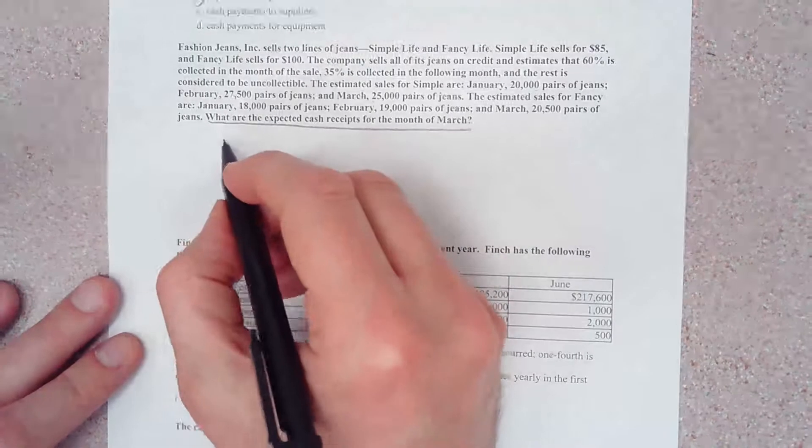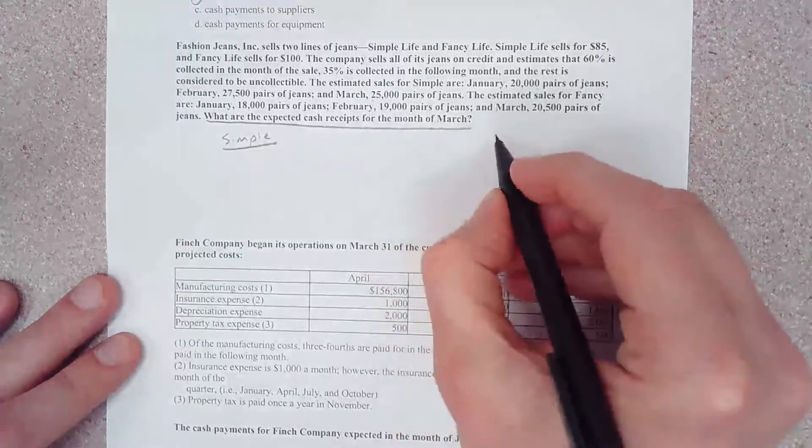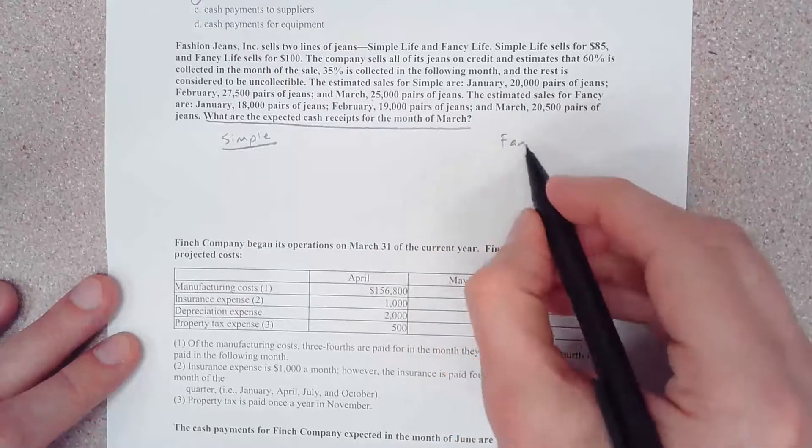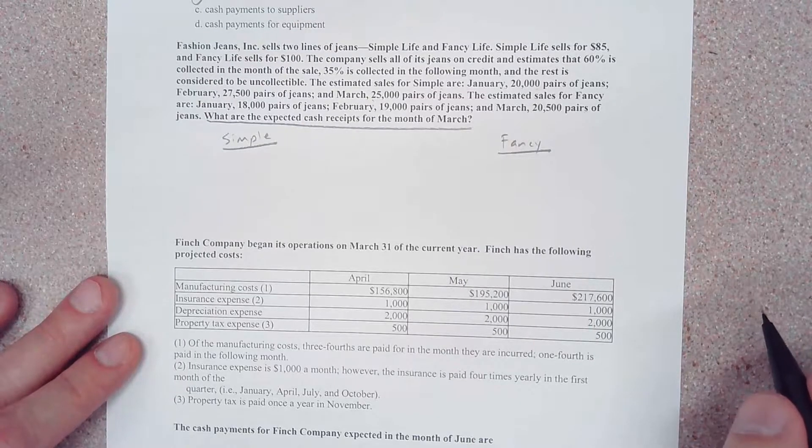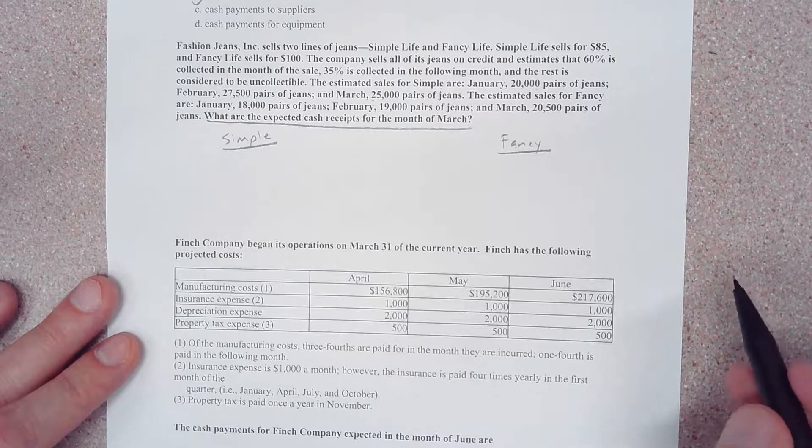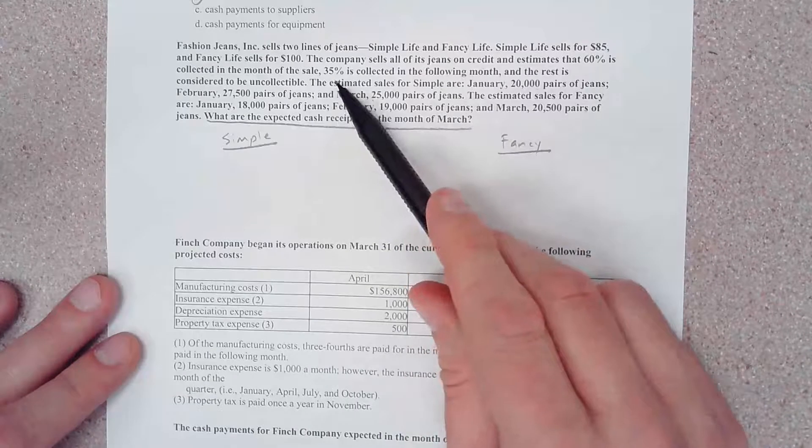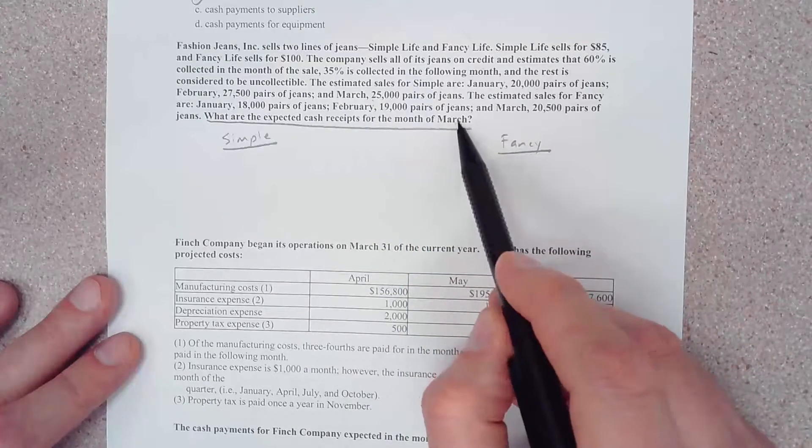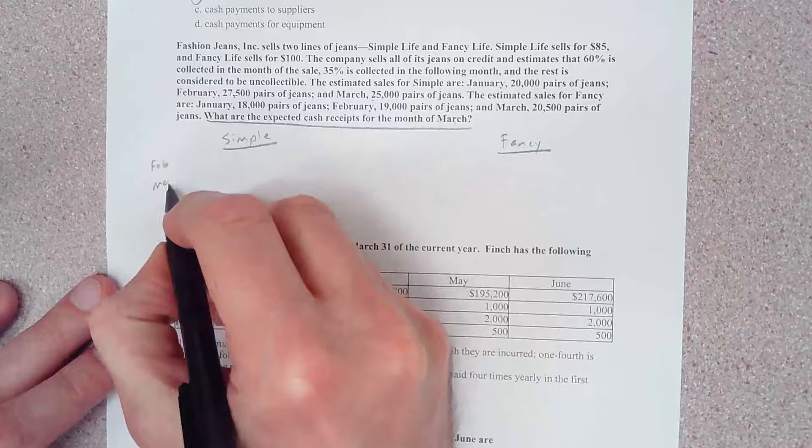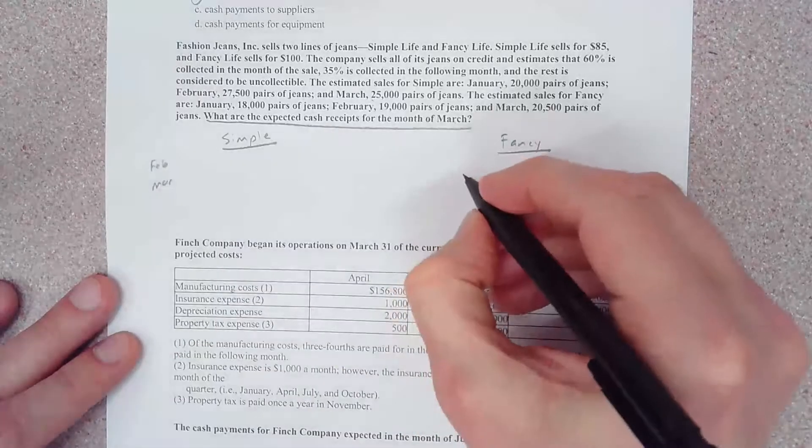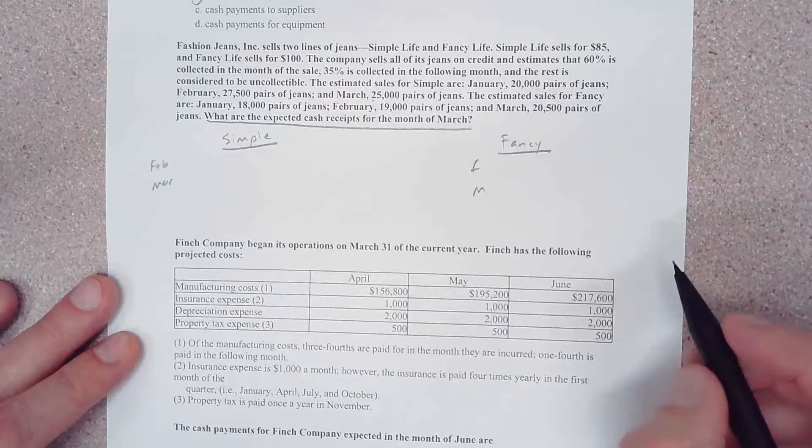Let's make a column for Simple and another column for Fancy. They collect 35% in the following month and they're asking about March, so we're going to need to know February and March.